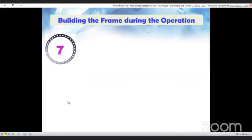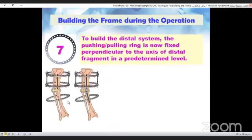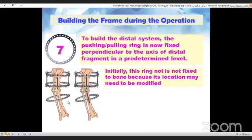In step seven, the distal system is now started. To build it, fix the pushing pulling ring perpendicular to the axis of distal fragment. This ring is initially left unfixed because its location may need to be modified later.